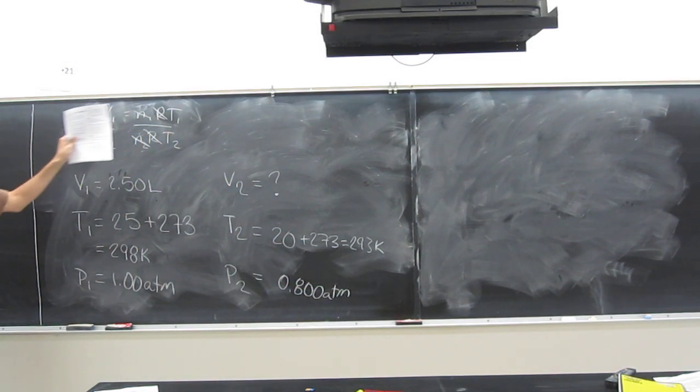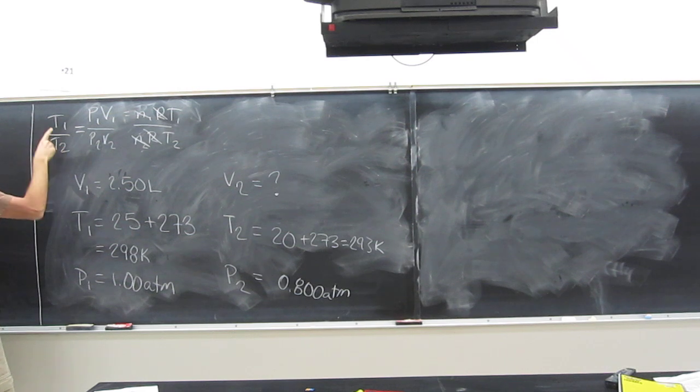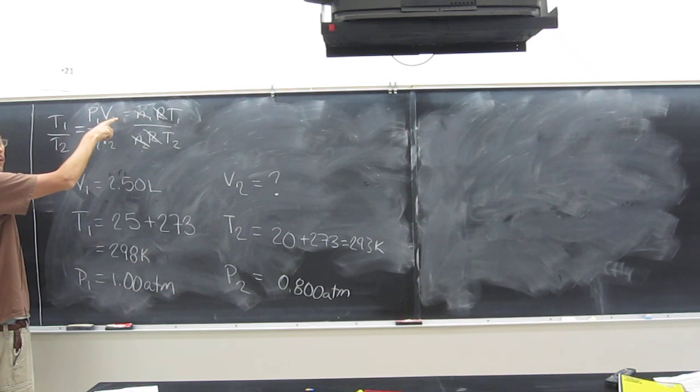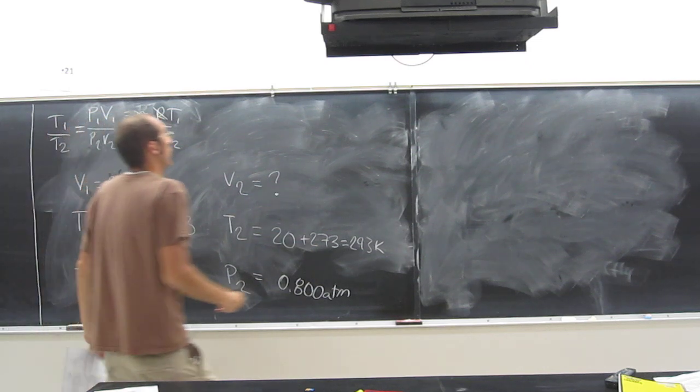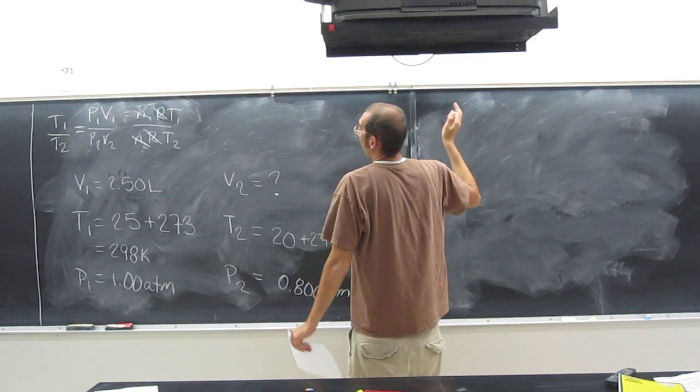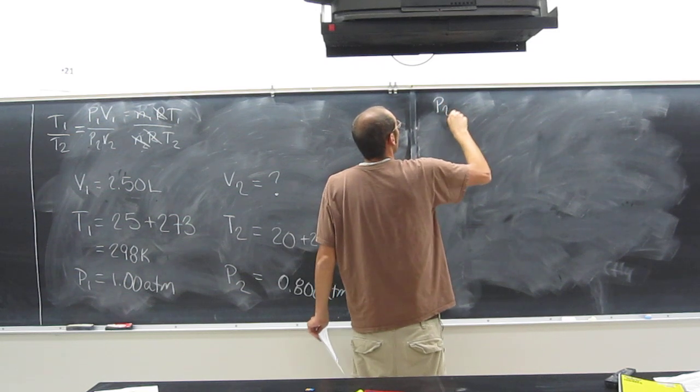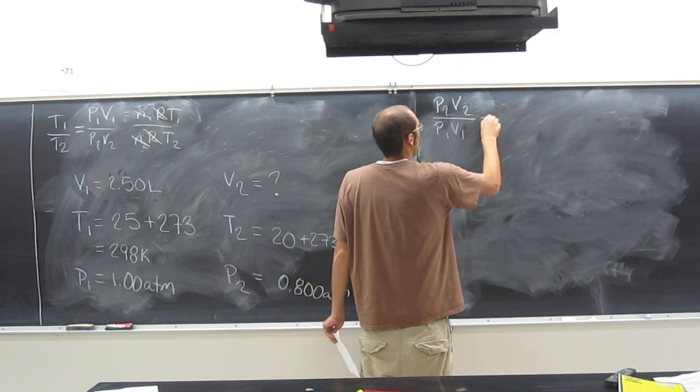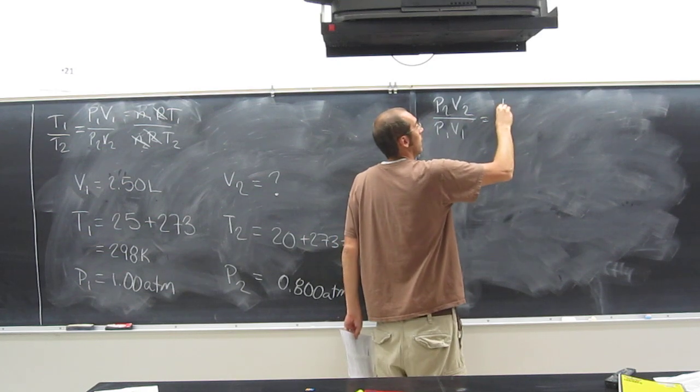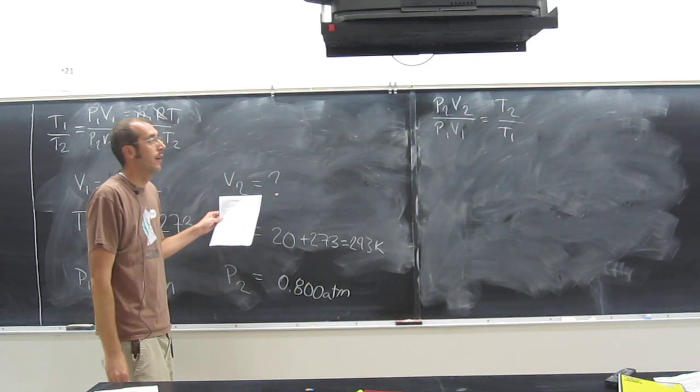Essentially our new equation is going to be P1 times V1 over T1 equals P2 times V2 over T2. And we're looking for V2. So the first step is to flip both sides of that equation over. Since I want V2 on the left side, I'm going to do it this way.